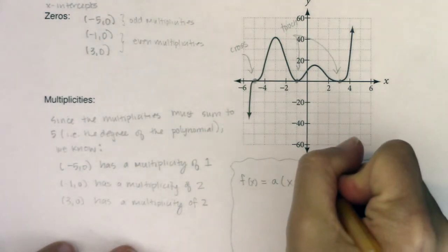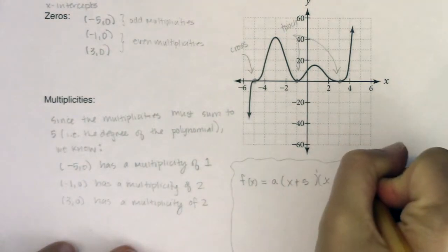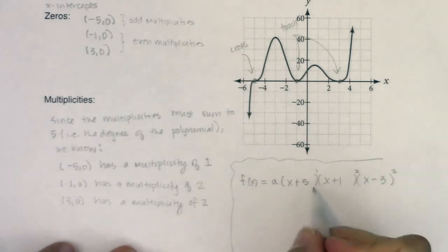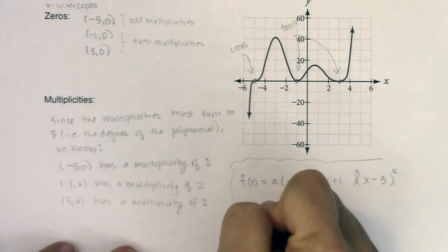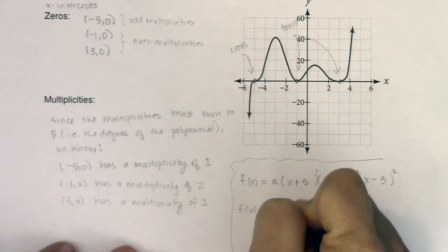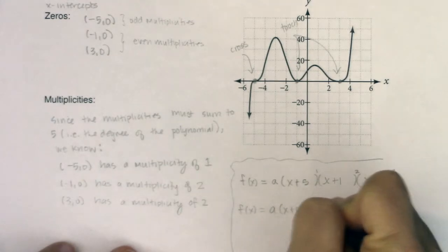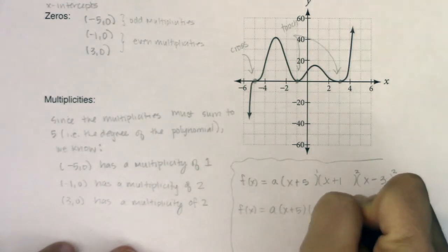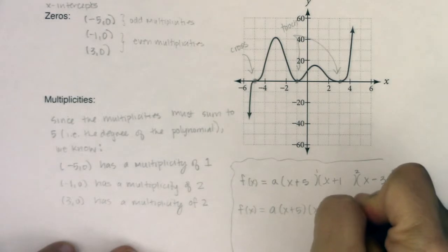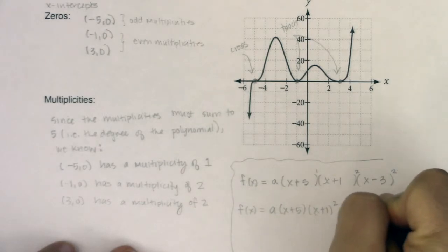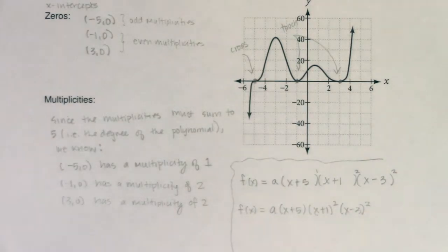But we know the multiplicities. The multiplicity refers to the powers on each of these factors. So we have 1, 2, and 2 respectively. So if I'm simplifying this a bit, I know f(x) is equal to a times (x + 5). I know I have (x + 1) squared, because negative 1, 0 touched the x-axis. It had to have an even power, an even multiplicity. Same thing with the zero at x equaling 3.